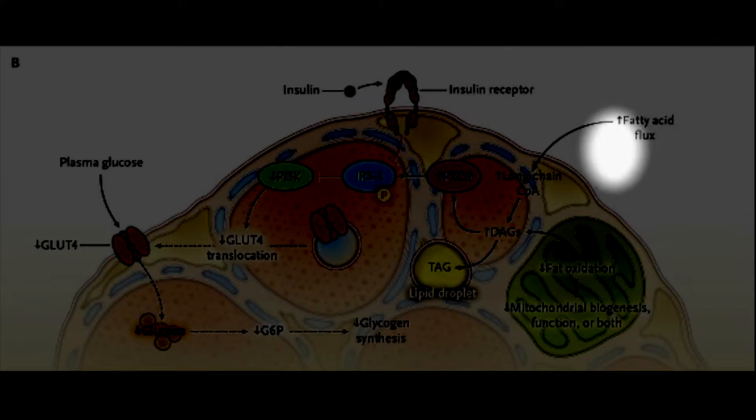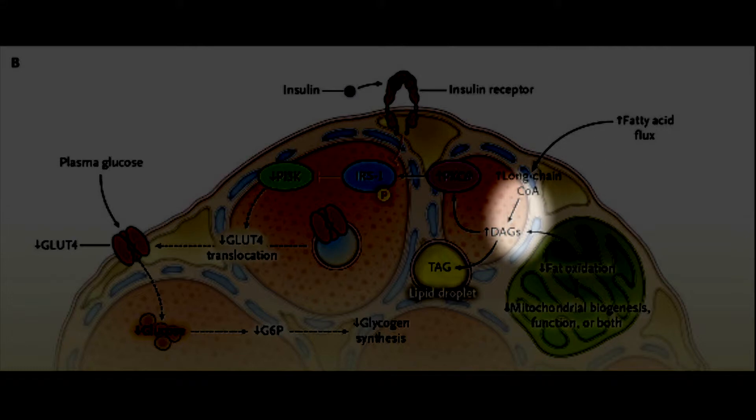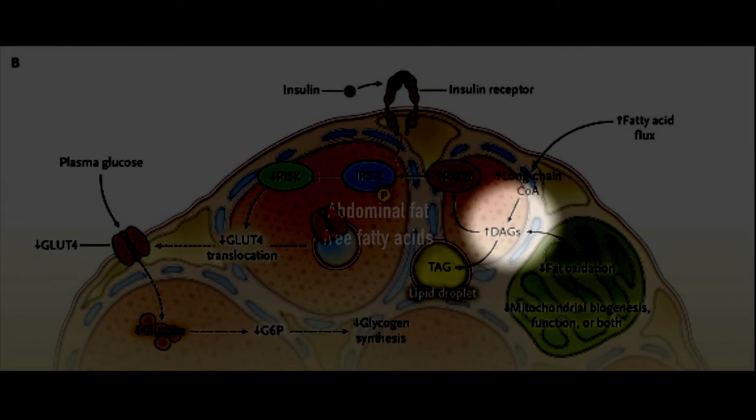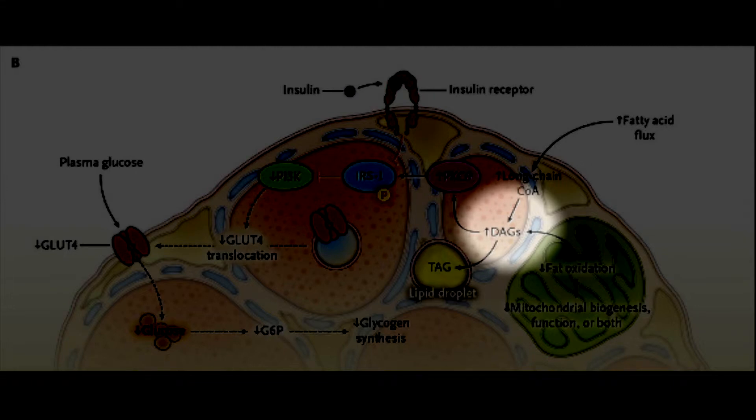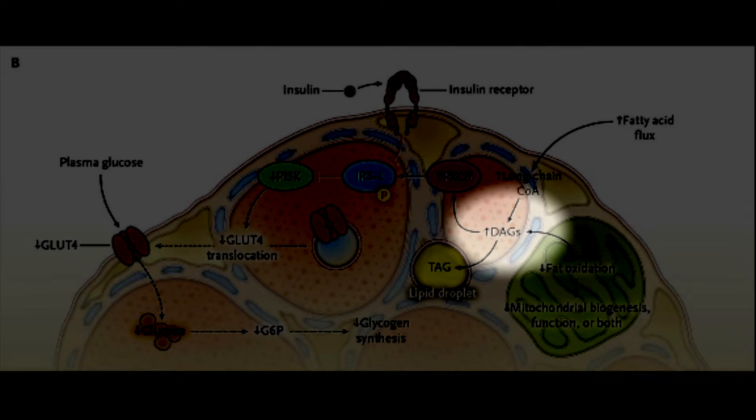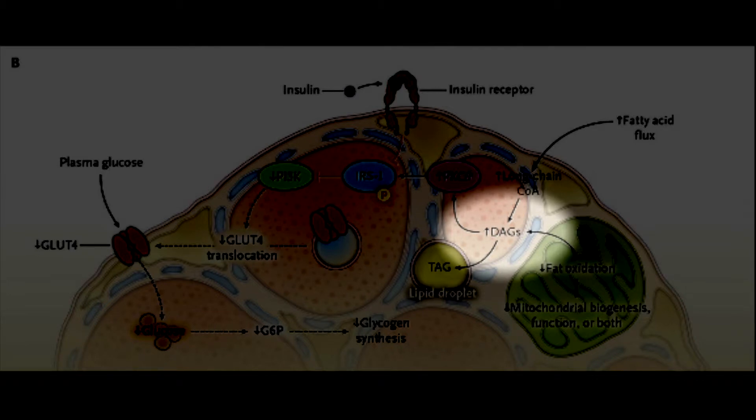In insulin resistance, there is an increase in free fatty acid flux into the cells. This occurs by a couple mechanisms. One, there is increased abdominal adiposity which causes increased free fatty acid flux into the cell. This also occurs within hours of digesting foods that are high in fat. This leads to intermediates called diacylglycerols that are produced.